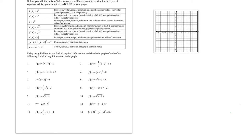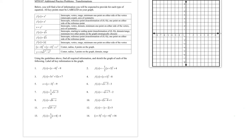Looking at problem 6, the square root function. The parent square root function starts at (0, 0) — that's the starting point, with nothing to the left of it. When x = 0: √(0 - 5) = √(-5), which is not real. So there is no y-intercept. Setting y = 0: 0 = √(x - 5) - 3, adding 3: 3 = √(x - 5), squaring: 9 = x - 5, so x = 14. There's one x-intercept at (14, 0).